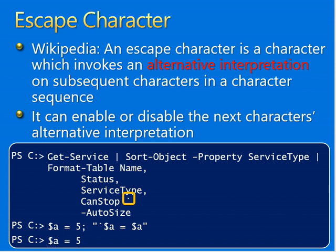An escape character can enable or disable the alternate interpretation of the next character. When indicating a literal, when an escape character precedes a variable it prevents the value from being substituted for the variable. When an escape character precedes a double quotation mark, Windows PowerShell interprets the double quotation mark as a character, not as a string delimiter.